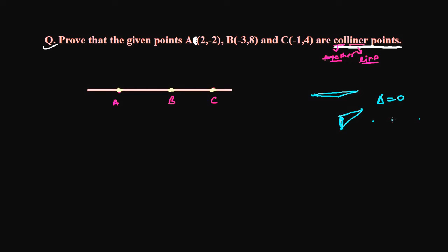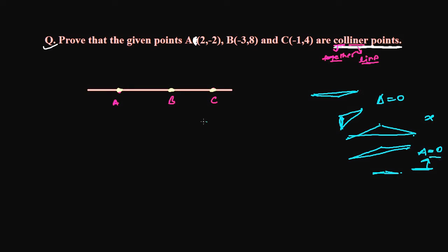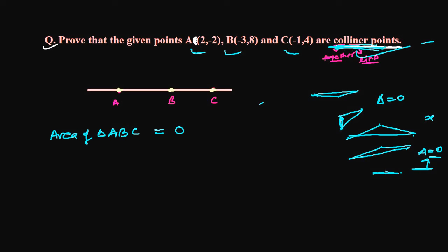When will the triangle's area be zero? Initially the triangle was bigger and the area was something X. Now as the triangle gets smaller, the area decreases. When the third point moves into the same line as the other two points, the triangle becomes zero area. So if I can show that the area of triangle ABC equals zero, then it means I'm proving that these three points are collinear — only collinear points can form a triangle whose area is zero.